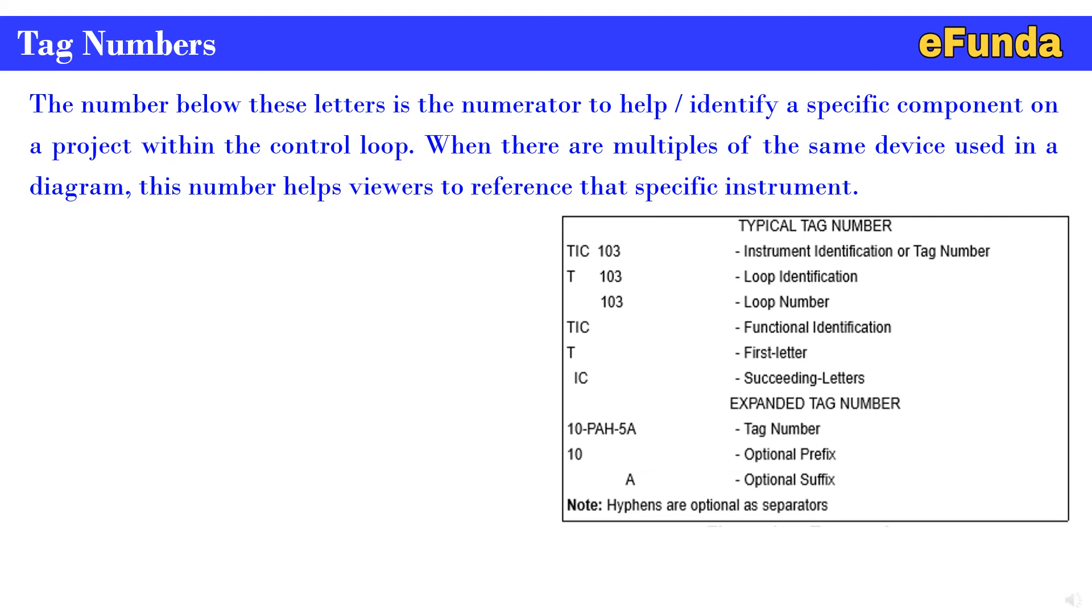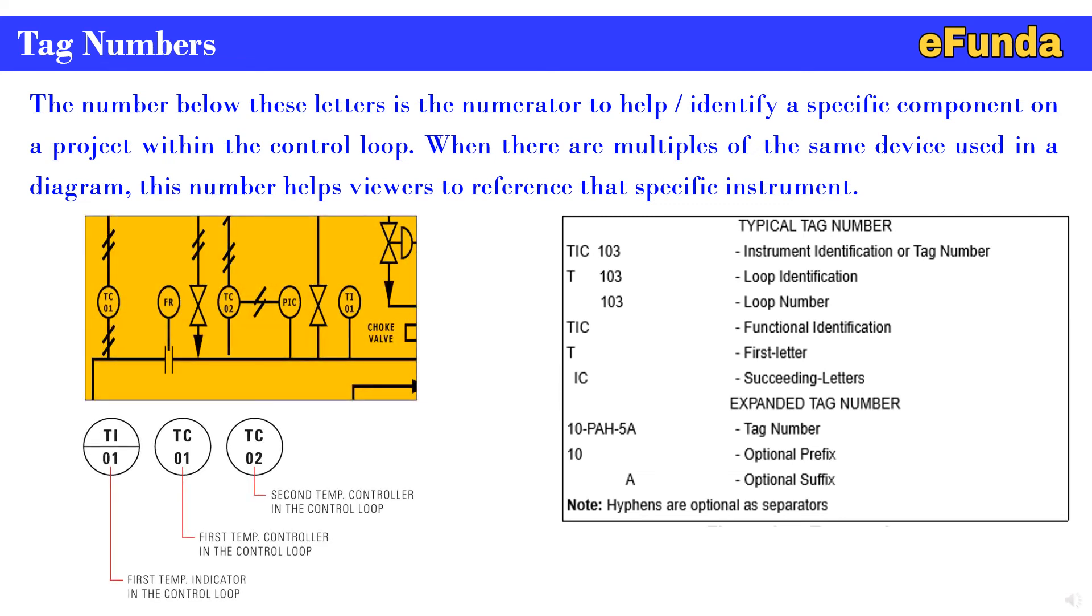Similarly, on the left hand side, one can see the P&ID diagram where TI, TC, TC are indicated. We will see the details here. TI-01 is the first temperature indicator in the control loop. TC-01 is the first temperature controller in the control loop. TC-02 is the second temperature controller in the control loop. This is how the tag numbers are used for identification of the multiple functions or multiple devices used in the diagram.